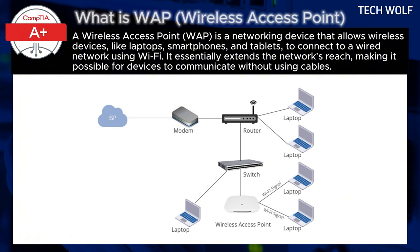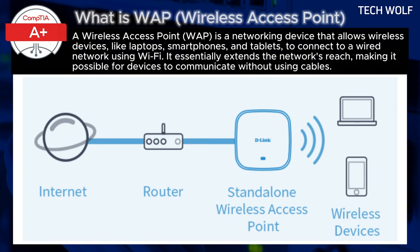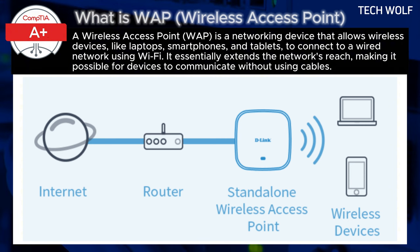Types of wireless access points — Standalone access points: Standalone WAPs are simple devices that operate independently. They are typically used in small businesses or home networks where basic Wi-Fi coverage is needed. These devices are easy to set up and provide Wi-Fi access for a small number of devices. Use case: a small office or home where only a few wireless devices need to connect.